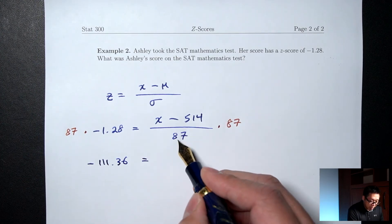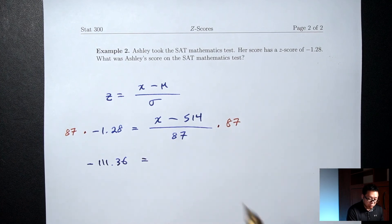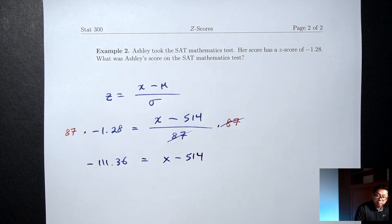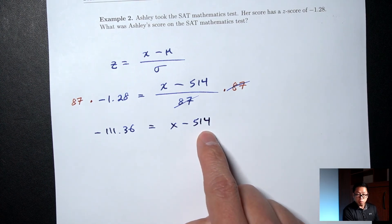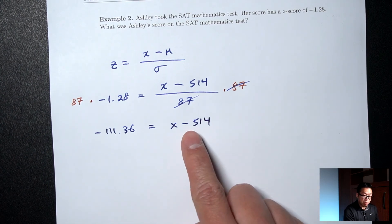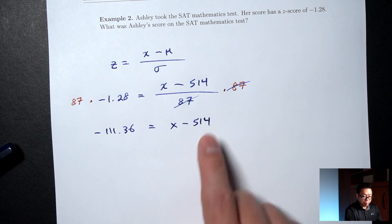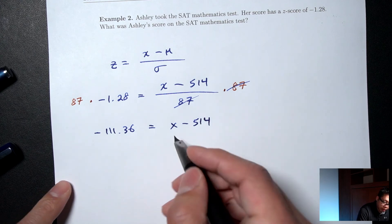On the right side, dividing by 87 and then times-ing by 87, that's going to cancel each other out. And we're left with x minus 514. We need to get rid of this minus 514. So that's a subtraction. So to undo a subtraction, you do the opposite, which is add. We're going to add 514 to both sides.